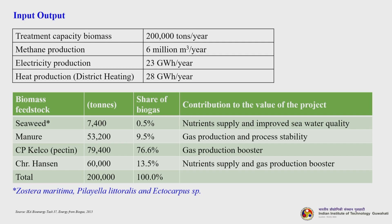Electricity production is 23 gigawatt hours per year and district heating is 28 gigawatt hours per year. The major biomass feedstock is the seaweed — which was the initial target — containing various biogas-producing species: Zostera maritima, Pilella littoralis and Ectocarpus species. Approximately 7,400 tons of seaweed is used, with a share of biogas of about 0.5%; its contribution to the project value is nutrient supply and improved seawater quality.